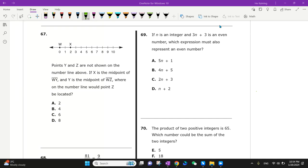If x is the midpoint of wy, and y is the midpoint of wz, where on the number line would point z be located?